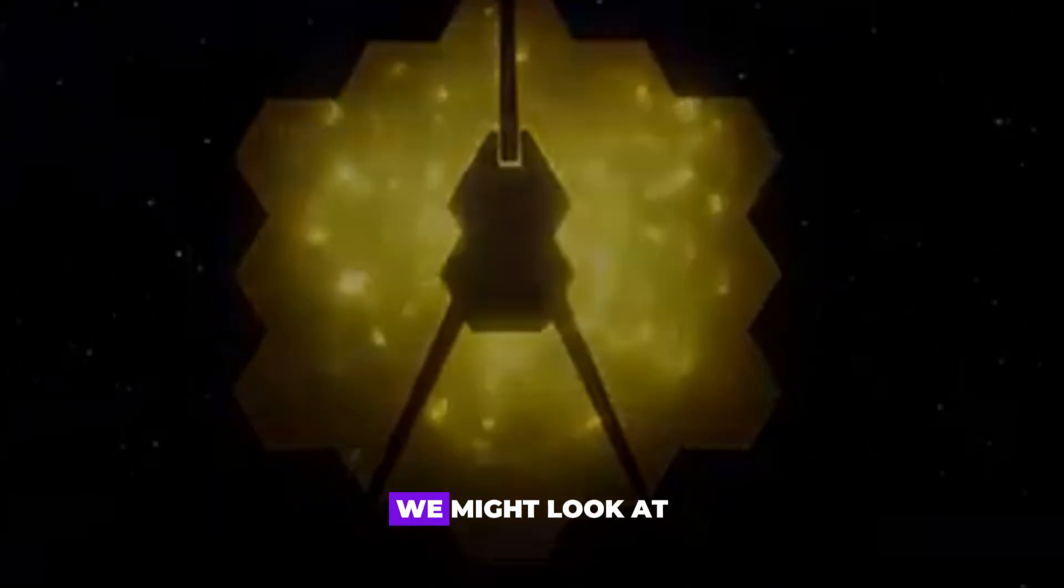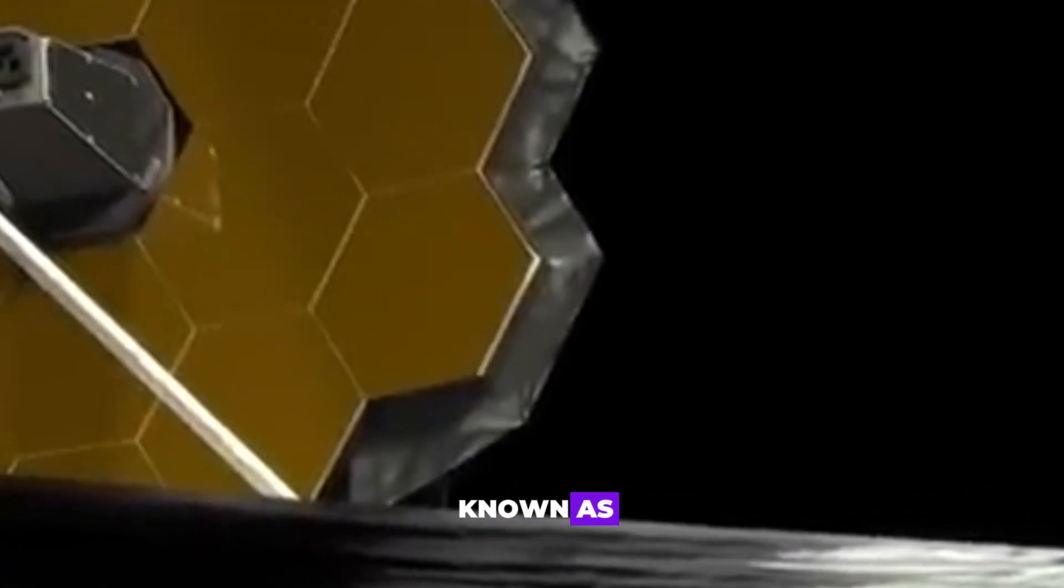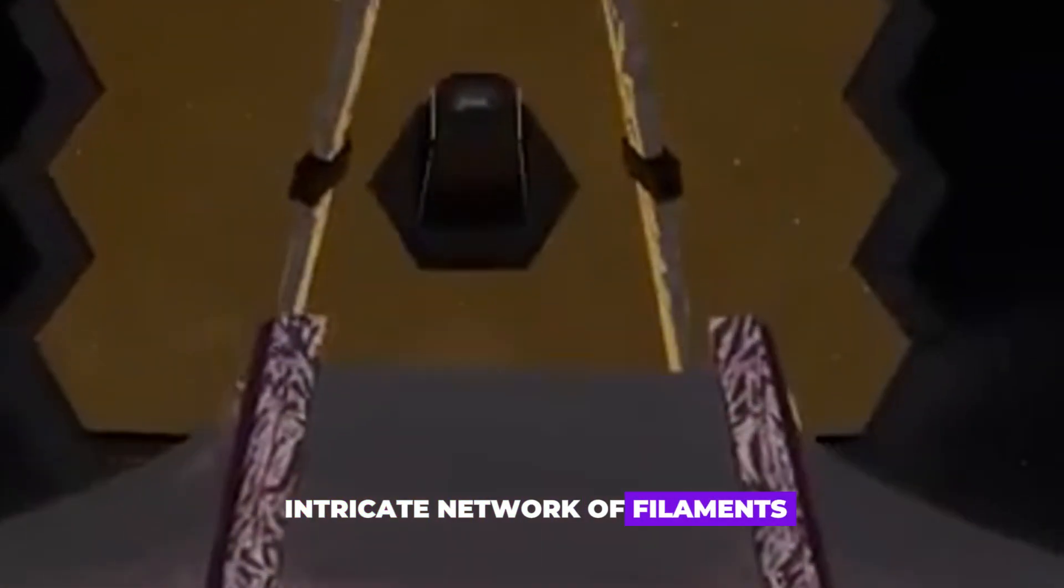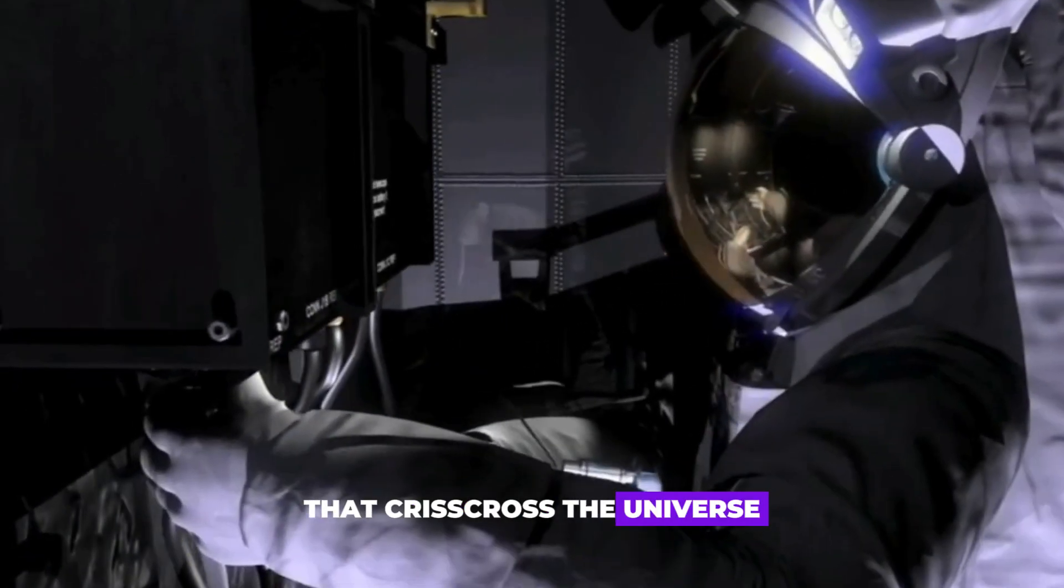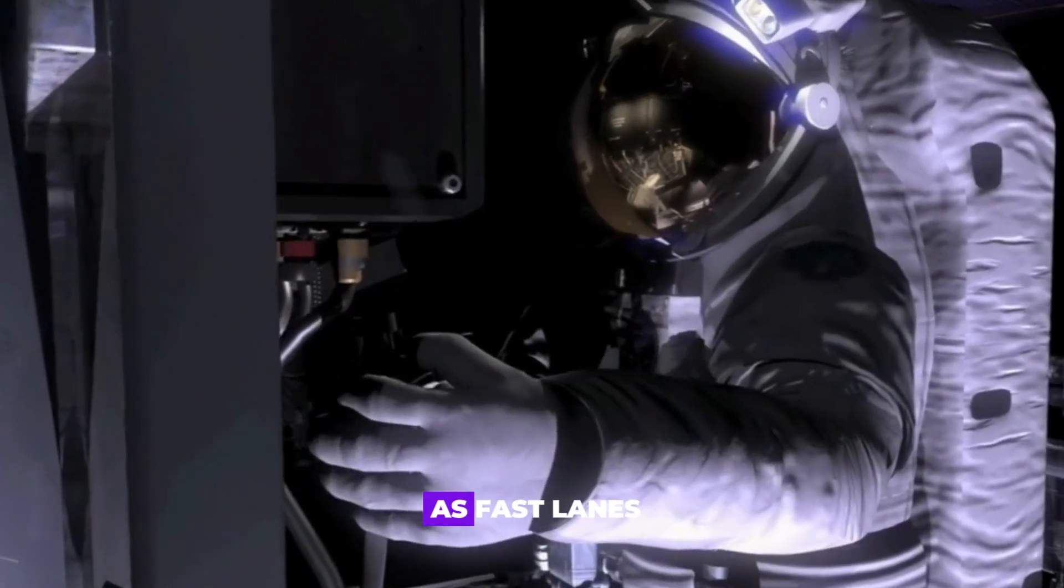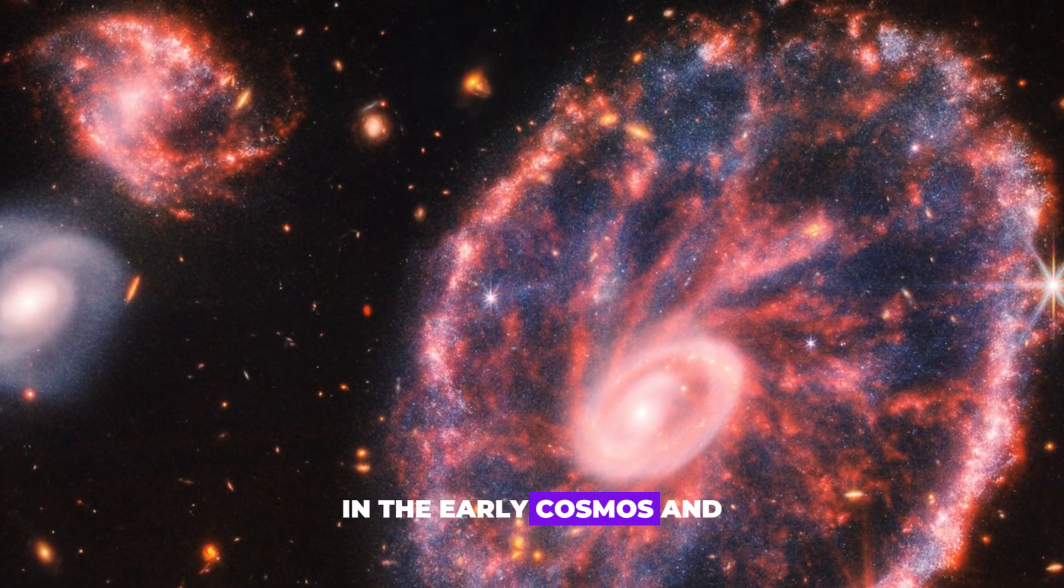Alternatively, we might look at the role of what's known as the cosmic web, the intricate network of filaments made of both regular and dark matter that crisscross the universe. Could these structures serve as fast lanes for material to come together in the early cosmos?